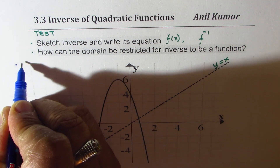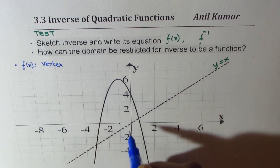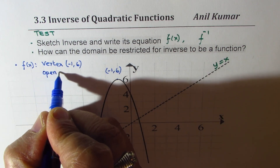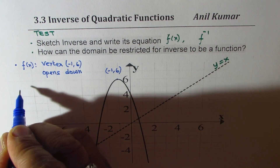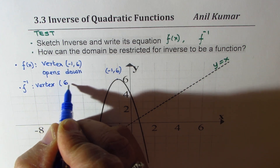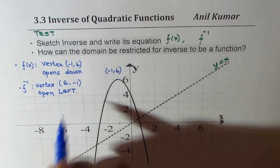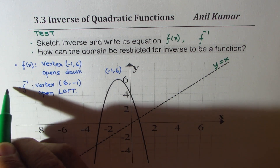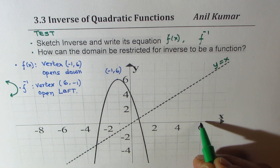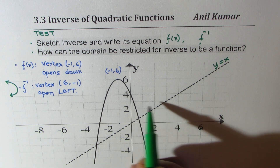From our observation, the function f(x) has its vertex at the point (−1, 6) — vertex is a very critical point. This parabola opens downward. So the inverse will have a vertex at (6, −1), and since the original opens down, the inverse will open to the left — in this direction from vertex (6, −1).